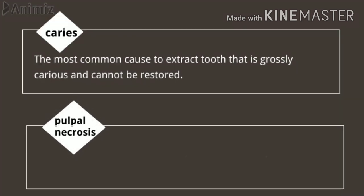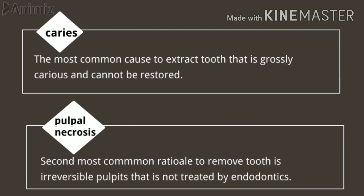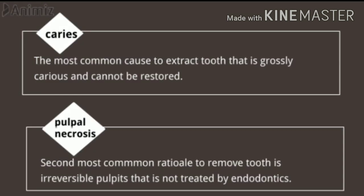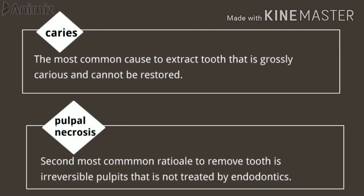The second indication for extraction is pulpal necrosis. Pulpal necrosis is the death of the pulp due to dental trauma. Pulpal necrosis or irreversible pulpitis is not amenable to endodontics. This may be the result of a patient continuously declining endodontic treatment, or a root canal that is already tortuous, calcified, and untreatable. For such a tooth, extraction is the option.